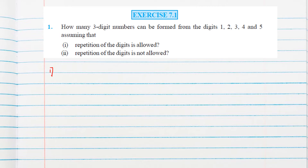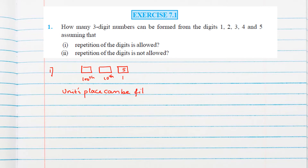A three-digit number means we have three places: ones place, tens place, and hundreds place. Out of the five numbers, we can fill the units place with five options. So, the units place can be filled in five ways.